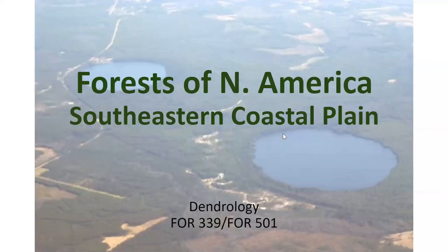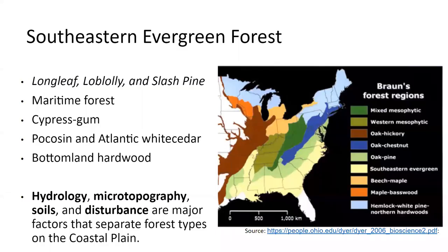We're going to continue our lecture series on forests of the southeastern coastal plain. Last lecture we talked about variations in evergreen forests — longleaf pine, which is a historically widespread forest type, versus loblolly and slash pine, which are the forests we more frequently see today and have a lot of commercial importance. Today we're going to talk about maritime forest, cypress gum forest, pocosins and Atlantic white cedar, and bottomland hardwood forest, which will take us inland, and then we'll pick up the Piedmont in the next lecture.